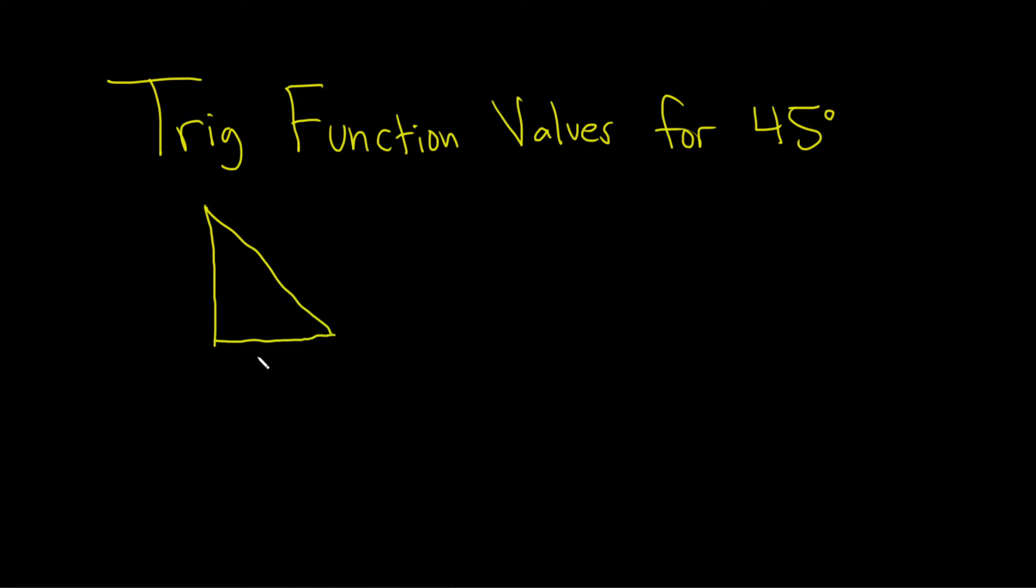This triangle has sides of length 1 and 1, and the hypotenuse is the square root of 2. This angle is 90 degrees and both of these angles are 45 degrees.